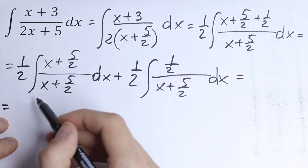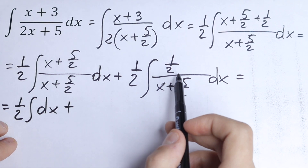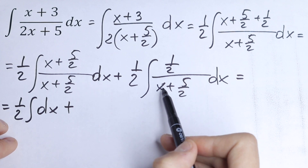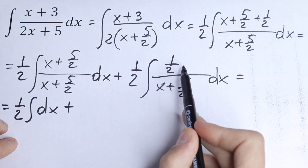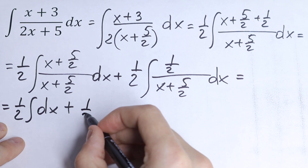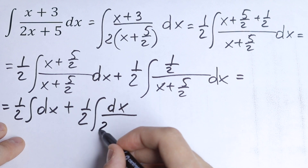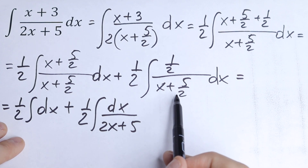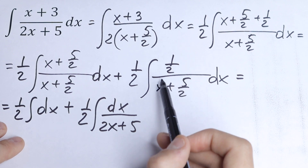We can cancel (x + 5/2) over (x + 5/2), so that becomes 1. We will have one half times the integral of dx. Then, looking at the second part, we combine to get (2x + 5)/2 in the denominator, and the two cancels with the one half, so we can write this as one half times the integral of dx over (2x + 5).